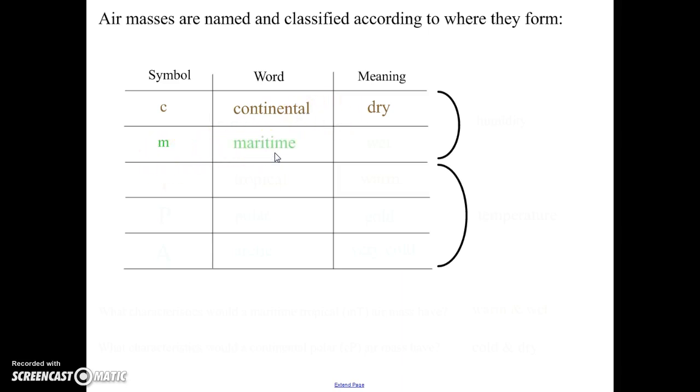m stands for maritime, which means related to the oceans or the seas. And so a maritime air mass is a wet air mass.